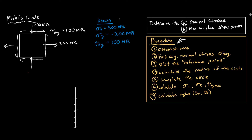I listed the known quantities that we know. We know sigma x is 300 megapascals, sigma y is negative 200 because it's going in that direction, and the shear stress on the x-y plane is 100 megapascals positive. The reason it's positive is because if we look at the right-hand side, our shear stress arrow on the stress element is going up.